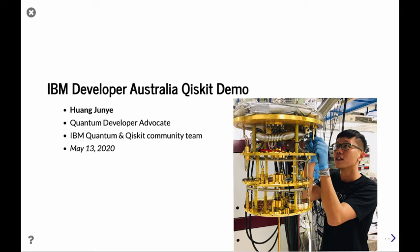My name is Jun Yeh — I'm a quantum developer advocate for IBM Quantum and the Qiskit community team. I was doing a PhD at the National University in experimental low-temperature physics. That's why you see in my profile photo an image of a dilution refrigerator. I wasn't exactly doing quantum computing, but I used the same machine that cools things to very low temperatures, close to 15 millikelvins.